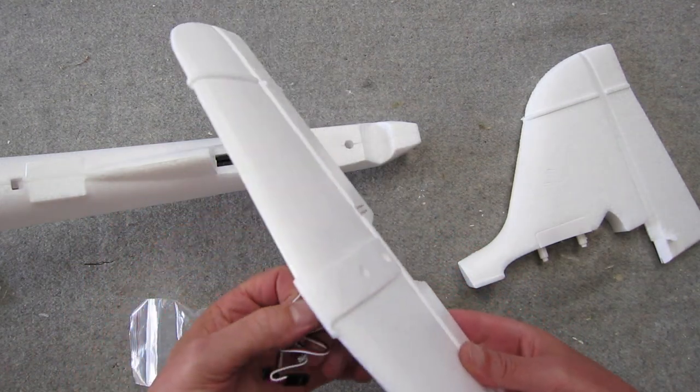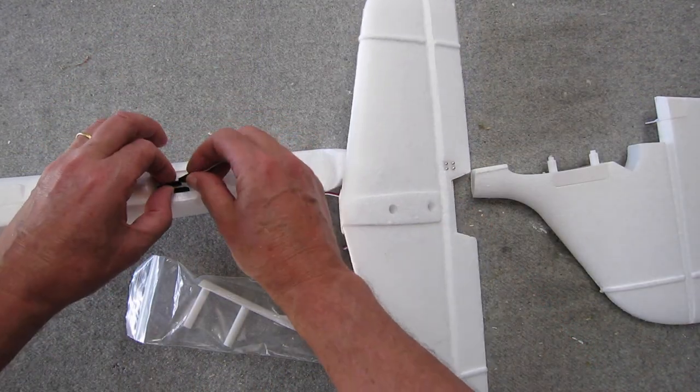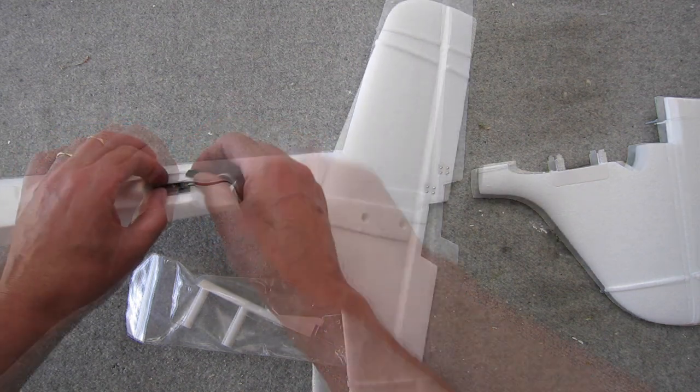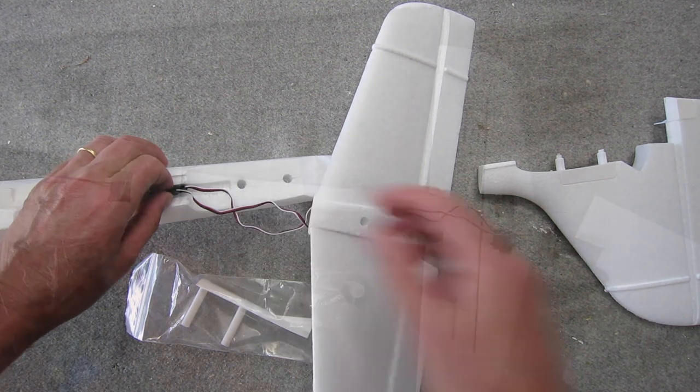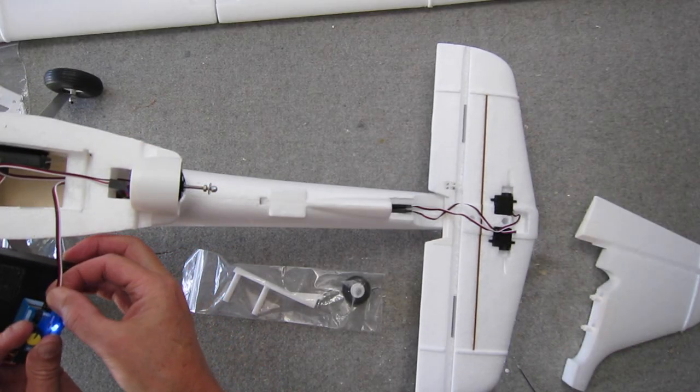Next step is to assemble the tail. First up, we're going to work out which way to plug in the elevator and rudder servos because they're not indicated in any way on those servo plugs. So I just decided to plug them in, use a servo tester to work out which is the correct way around.